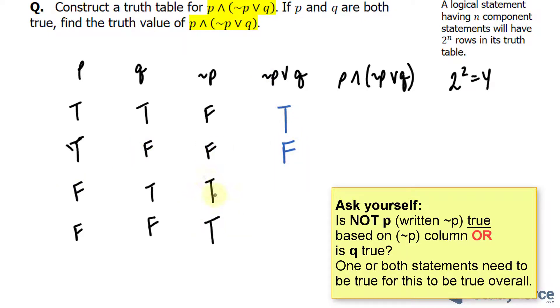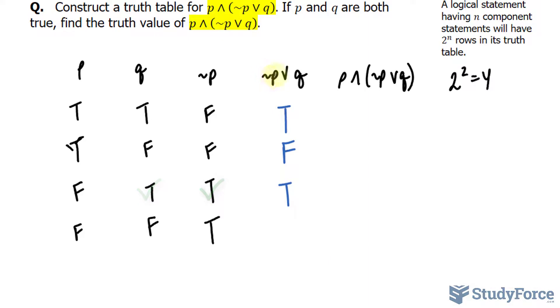Moving on to the next row: ¬p is true, and q is true. Both of these are true, which makes the statement true. Lastly, ¬p is true, and q is false. Because one is true, this makes this true.